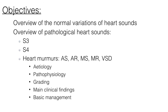Just to recap: this podcast started with normal heart sounds and their variations, then covered two pathological added heart sounds, and five heart murmurs taught in medical school — aortic stenosis, aortic regurg, mitral stenosis, mitral regurg and ventricular septal defect. For each murmur I covered the etiology, pathophysiology, how to characterise and grade them, their main clinical findings, and basic investigations and management. I hope you enjoyed this podcast and that it helps with your revision. With each murmur you can pause the video, take a screenshot and add it into your notes. Thank you so much for listening.